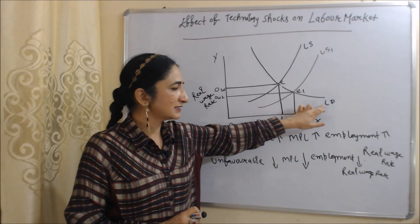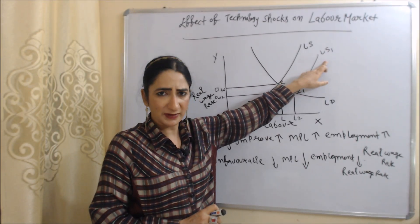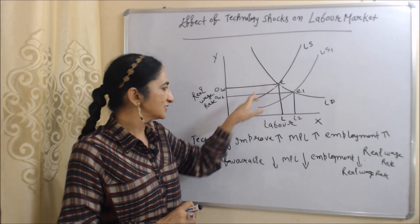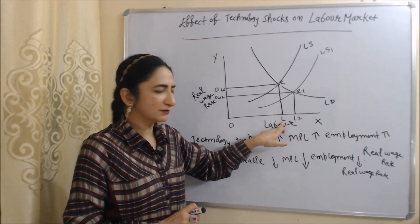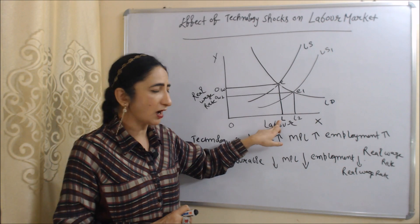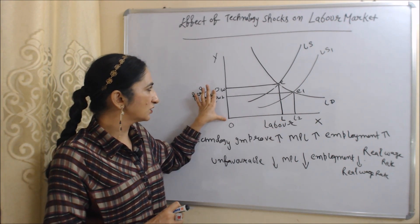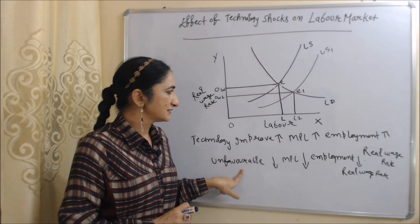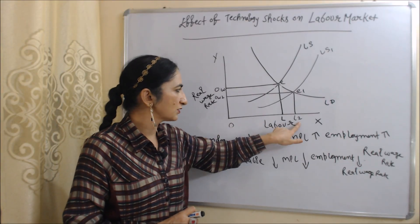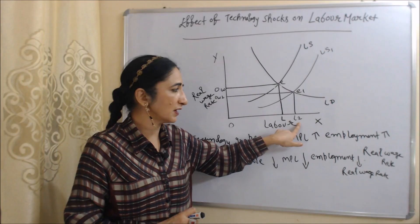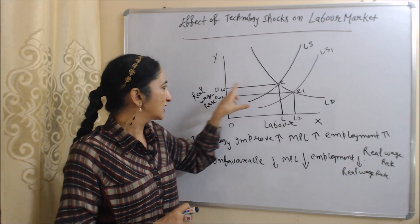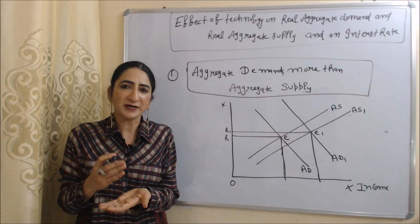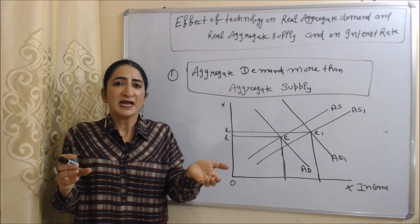In this diagram, the x-axis has labor and the y-axis has real wage rate. LD is the labor demand curve and LS is the labor supply curve. Initially when technology is favorable, equilibrium is at E — we use OL amount of labor, real wage is OW. When technology becomes unfavorable, labor usage increases to OL2, our new equilibrium is E1, and real wage falls from OW to OW2.